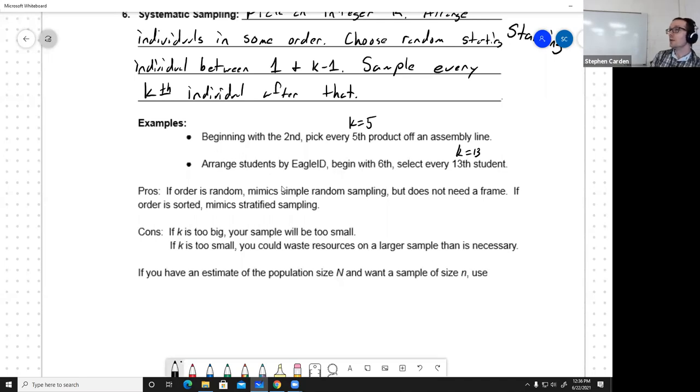What if the order is sorted? Let's say I'm trying to make a study group after the first exam and I take students and I rank them by their exam score. If I do a systematic sample, I'm going to get some students who didn't do so well on the low end, some in the middle, and then some on the high end. That will ensure that it's kind of like a stratified sample. I'm ensuring some representation from all parts of the population.